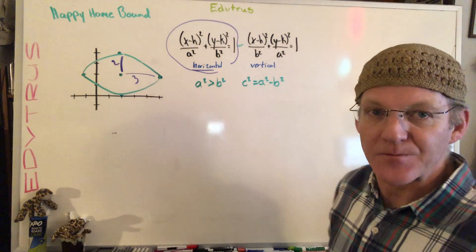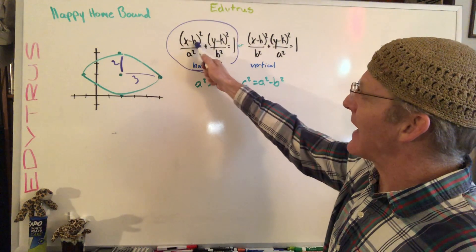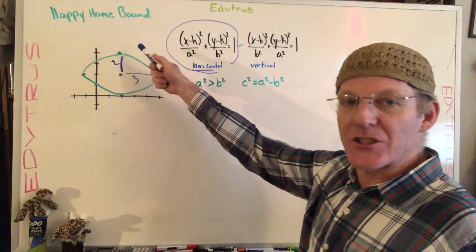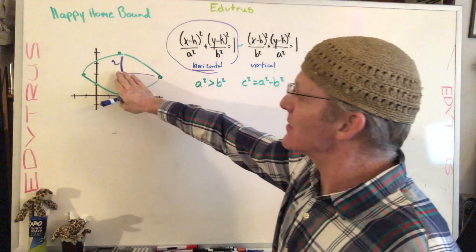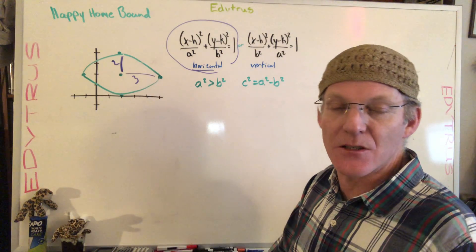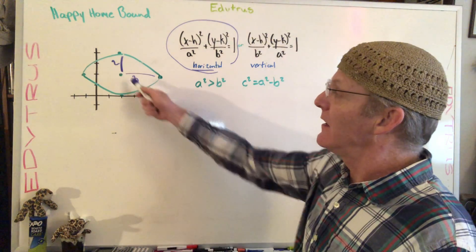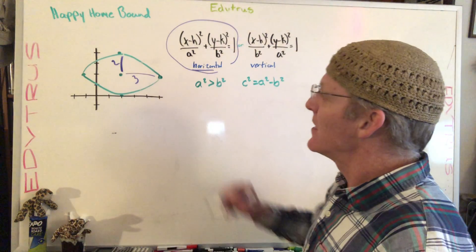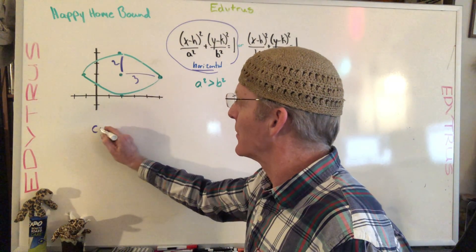Now we need to find H and K, which is the center. In this case we know it, but in other cases if they don't tell us, it's got to be the midpoint between the axes. Choose either axis, find its midpoint, and that's going to be your center.